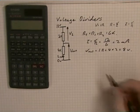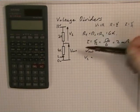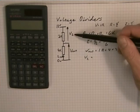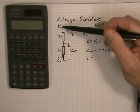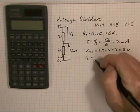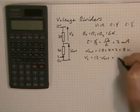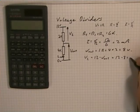If I then want to define V2, I can use Kirchhoff's voltage law. V out plus V2 will equal 12. So V2 will equal 12 minus V out, so that will be 12 minus 8, so that's 4 volts.